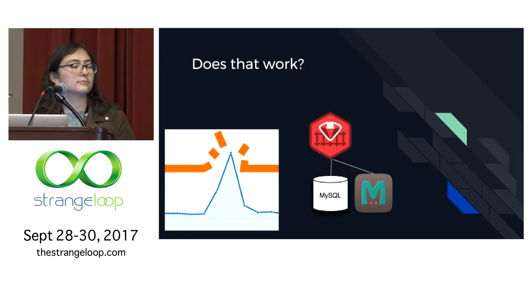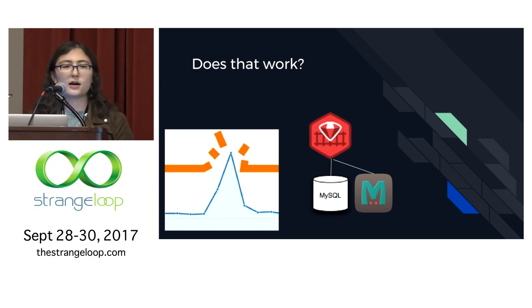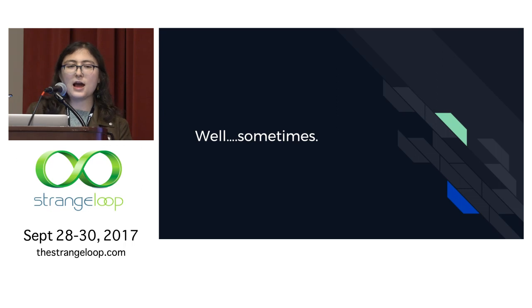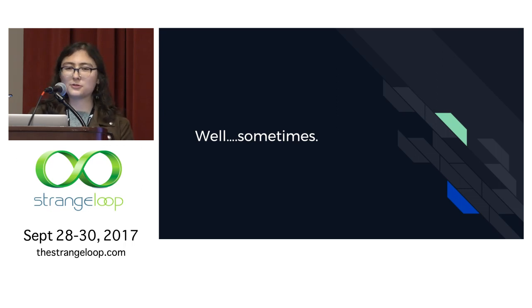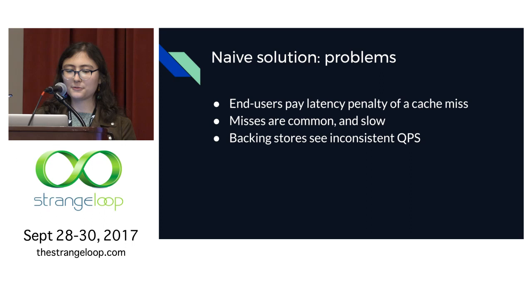In our first setup — a read-through LRU cache — all queries first check the cache. On a hit, return data to the user. On a miss, query the database, return data to the user, and stick it in cache with a TTL. On writes, invalidate keys in the cache. Treat expired keys as misses. When the cache is full, evict based on LRU. Does this work? Mostly. You're in a better place, but we've introduced some new problems and we can do a lot better.